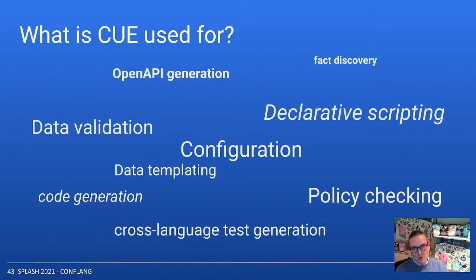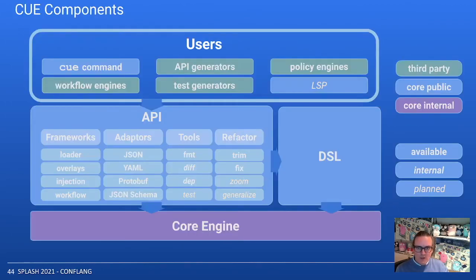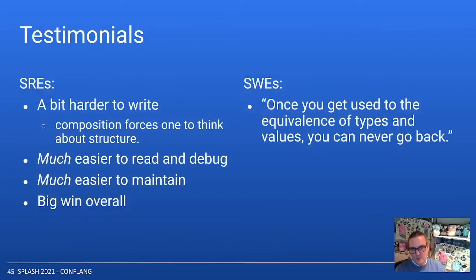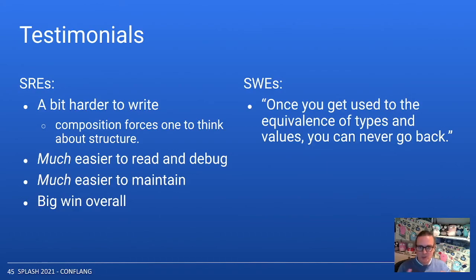Because CUE operates at so many levels, users have been using it for quite a wide variety of tasks. Some well-known users are Salesforce, Alibaba, Grafana Labs, and NTT Communications. CUE is also more than just the language — at its core it's a logic programming engine, and the DSL is just one interface to it. Regarding testimonials: feedback from SREs is that CUE is positioned in the bottom right corner of the language diagram, meaning very readable and maintainable. The compositional model forces one to think more about structure, which can make it harder to get going with CUE than GCL, but the result is actually much easier to read, debug, and maintain — and it's a big win overall.